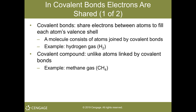Hydrogen has one valence shell electron, so by bonding two hydrogen atoms together, we get hydrogen gas created by sharing those two electrons to fill the valence shell. Next is methane gas. We have carbon, and if you look at the periodic table — there's one in the front cover of your lab manual — hydrogen has one valence electron above it, beryllium has two.